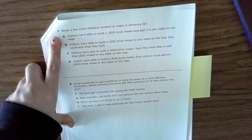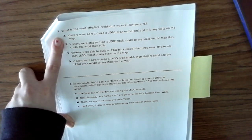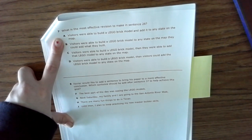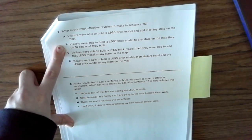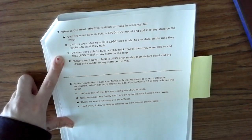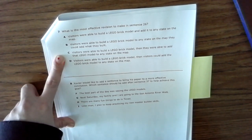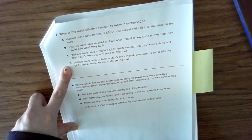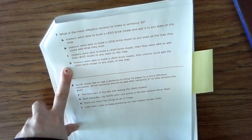Number seven: What is the most effective revision to make in sentence 26? A: Visitors were able to build a Lego brick model and add it to any state on the map. B: Visitors were able to build a Lego brick model to any state on the map they could add what they built. C: Visitors were able to build a Lego brick model then they were able to add that Lego brick model to any state on the map. D: Visitors were able to build a Lego brick model then visitors could add the Lego brick model to any state on the map.